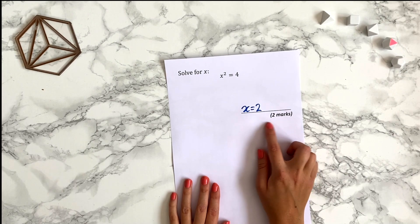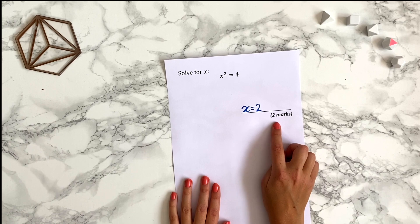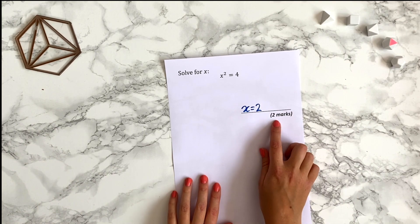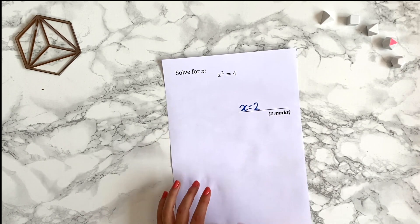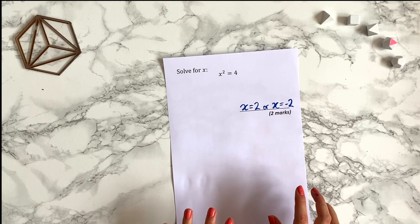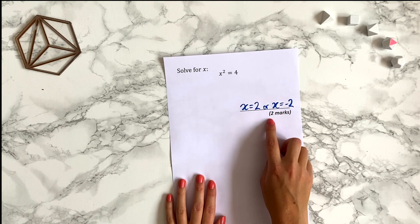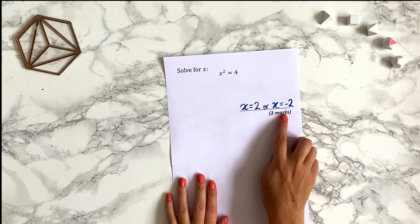So this is triggering alarm bells in my head. I'm thinking okay maybe there's something else I'm missing and indeed there is. There's another solution. If you square minus 2 you also get 4. So you can often get an idea of if you've written enough information by checking the mark allocation and in this case it helped me notice that I was missing something.